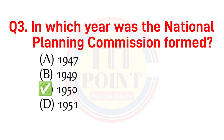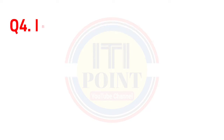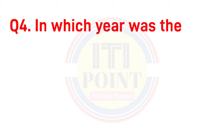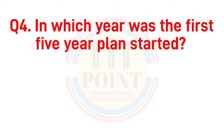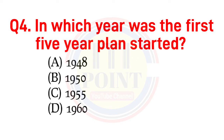In which year was the first Five-Year Plan started? A) 1948, B) 1950, C) 1955, D) 1960. The correct answer is option C: 1955.